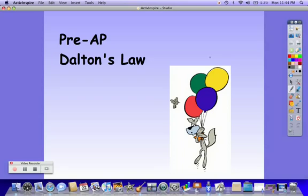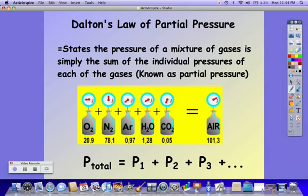Dalton's Law of Partial Pressures states that the pressure of a mixture of gases is simply the sum of the individual pressures of each of the gases. Each of those are known as the partial pressures. The P-total is equal to the pressure of each of the gases: P1 plus P2 plus P3 plus however many gases you have.